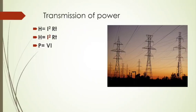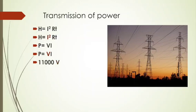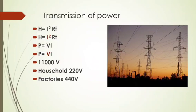Since power P equals voltage multiplied by current, to reduce current without reducing power we must increase the voltage. Hence, the power generated at the generating station is stepped up to a high voltage using step-up transformers and then transmitted to distant places. At substations, it is stepped down to 11 kV using step-down transformers, and further stepped down to 220 volts for household use and 440 volts for factories.